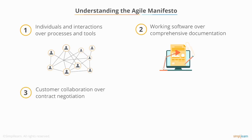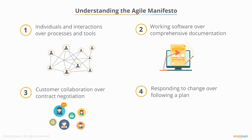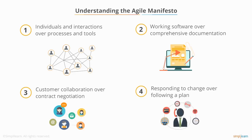Three: customer collaboration over contract negotiation. Rather than creating a detailed statement of work and then negotiating contracts, developers and customers should collaborate in order to progressively determine the requirements of the project. Four: responding to change over following a plan. Rather than being constrained by an original plan, developers should embrace change in order to meet the dynamic needs of the customer.